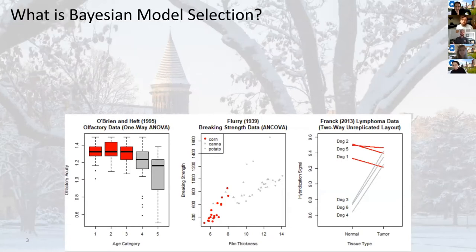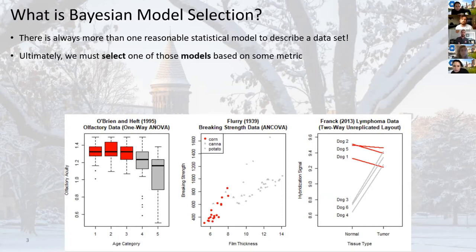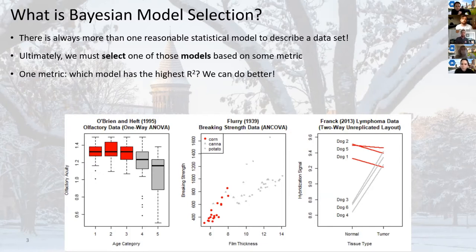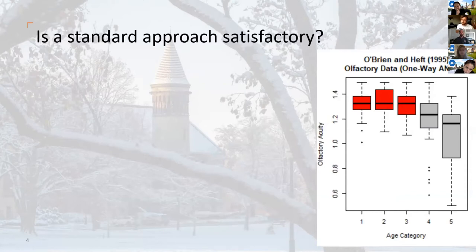So what is Bayesian model selection? I enjoyed that talk about the bike share and I'll refer back to it a couple times, because it prefaced a couple things I wanted to mention. First, there's always more than one reasonable way to model a data set. In the bike share talk, a Poisson regression, a random forest, and a linear model were all used — there's more than one way to model your data, but at the end you need to select one model based on some metric. In that talk the metric was root mean squared error or cross-validation prediction error. Specifically, what Bayesian model selection does is it quantifies the posterior model probability of each model under consideration, so you can select the most probable one.